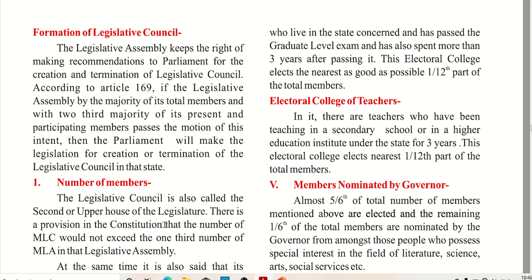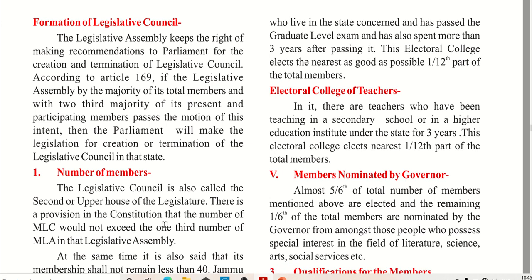So if a state wants to make an LC, the members will follow the two-thirds majority rule. If that is cleared, then they can create the LC. Parliament will then pass the necessary legislation.